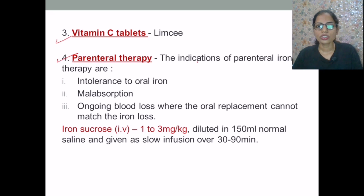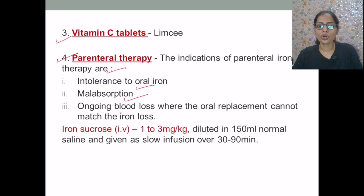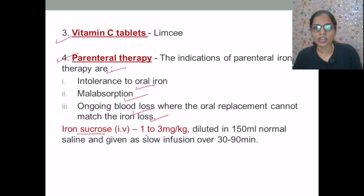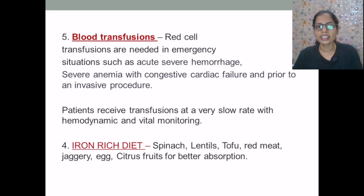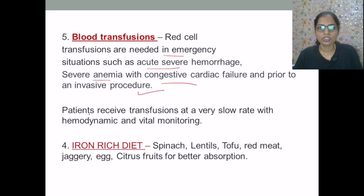In this case, parenteral therapy is not required. The indications for parenteral iron therapy are when the subject is intolerant to oral iron, or when there is malabsorption or ongoing blood loss where oral replacement cannot match the iron loss. In such cases, iron sucrose IV can be given at 1 to 3 mg per kg, diluted in 150 ml of normal saline and administered as a slow infusion over 30 to 90 minutes. Blood transfusion is given in rare cases of severe anemia, and is required during emergencies such as acute severe hemorrhage, severe anemia with congestive cardiac failure, or prior to invasive procedures. Patients who receive transfusions do so at a very slow rate with hemodynamic and vital monitoring.